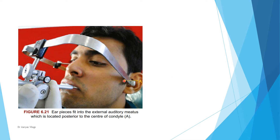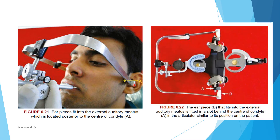The condyles are located at an approximate distance in front of the meatus. The earpieces fit into the external auditory meatus, which is located mostly near the center of the condyle. The earpiece, which fits into the external auditory meatus, is fitted in a slot behind the center of the condyle in the articulator.